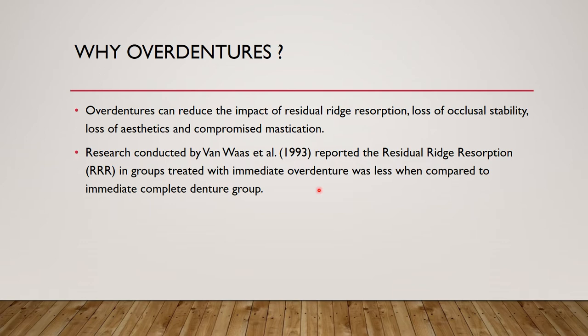Why do we make overdentures? Overdentures can reduce the impact of residual ridge resorption (RRR), loss of occlusal stability, loss of aesthetics, and compromised mastication. Van Was et al. in 1993 reported that RRR in groups treated with immediate overdenture was less compared to patients treated with immediate complete denture groups.